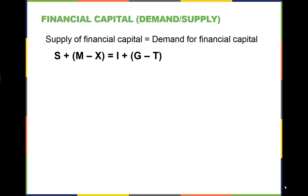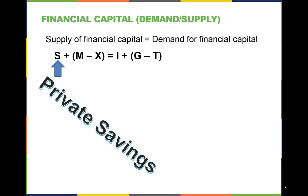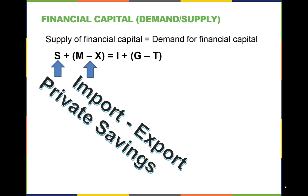Financial capital is another name for currency, or the value that currency holds in global trade. Each country demands and supplies this financial capital to grow their economies. A country can supply its own financial capital through its own savings, denoted by S in the equation — these are savings by individuals or firms. The other component of supply is the trade balance. If imports are greater than exports, then financial capital is flowing in as a supply.